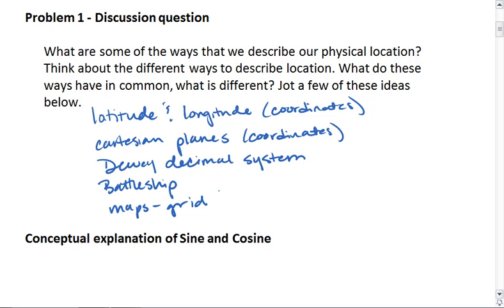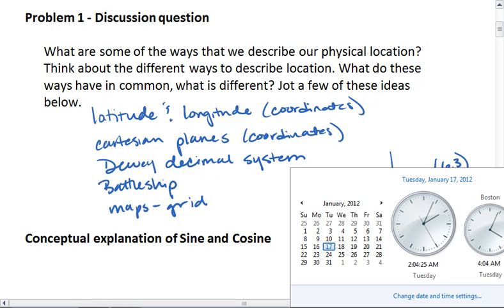What most of these methods have in common is that physical location is determined first by a horizontal position, say 6, and then by a vertical position, perhaps 3, so that every coordinate gives a unique point, which can be discovered going horizontally a certain distance and going vertically a certain distance.